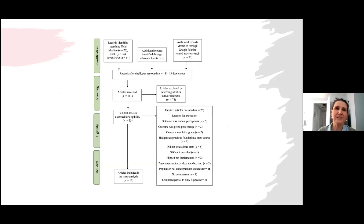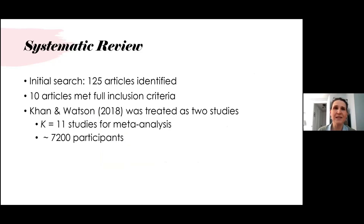Here is the full flow chart for the systematic review. Our initial search found around 125 articles, but after all the exclusions we were left with 10 eligible articles. One article ran separate analyses over two different semesters, so we treated it as two separate studies, resulting in 11 studies with approximately 7,200 participants for our meta-analysis.